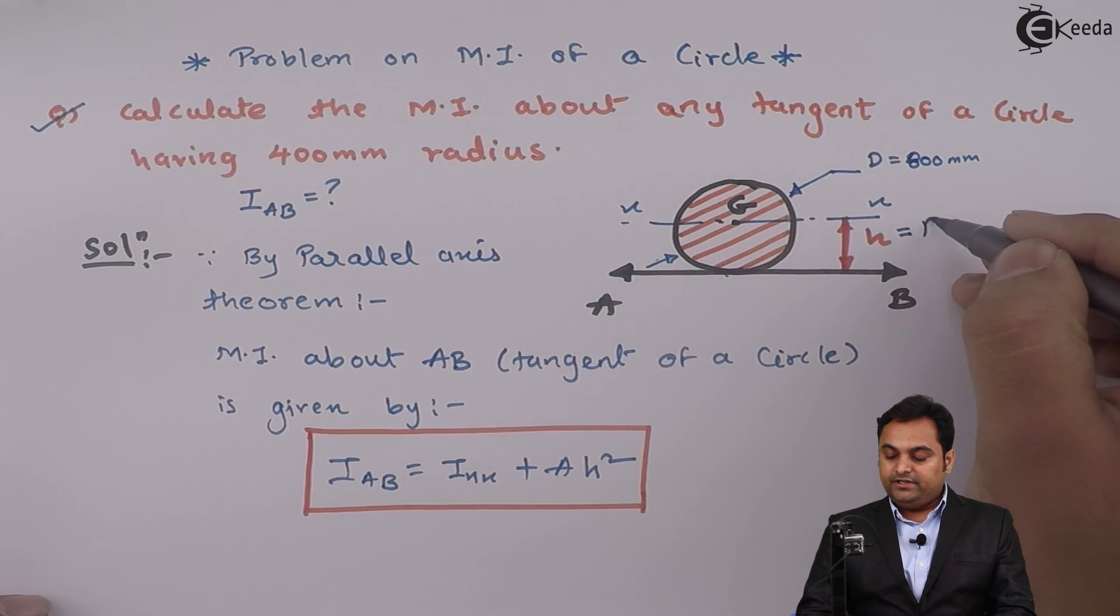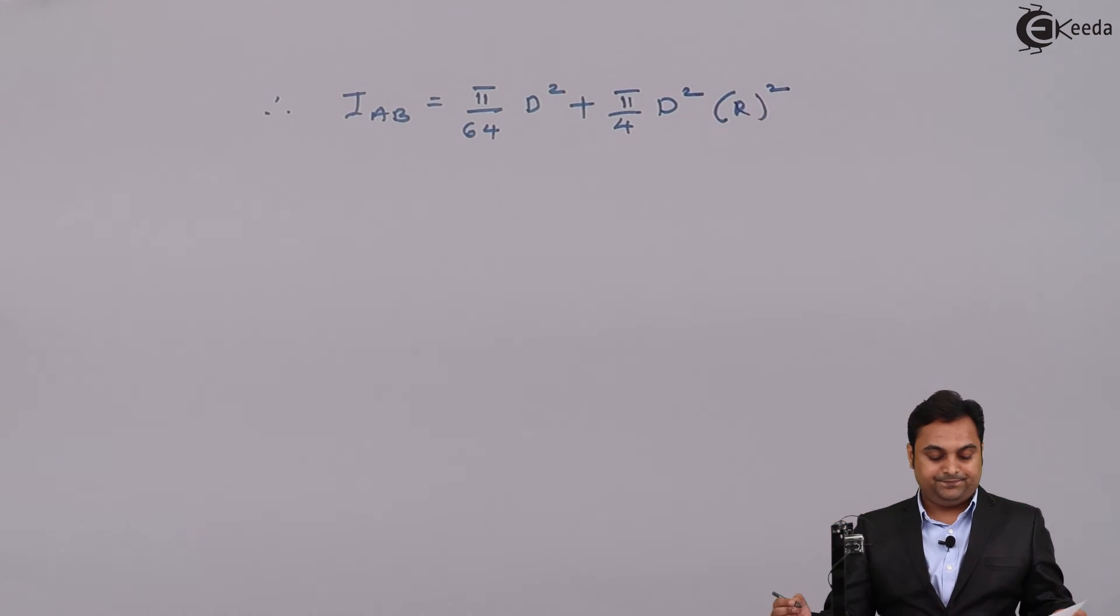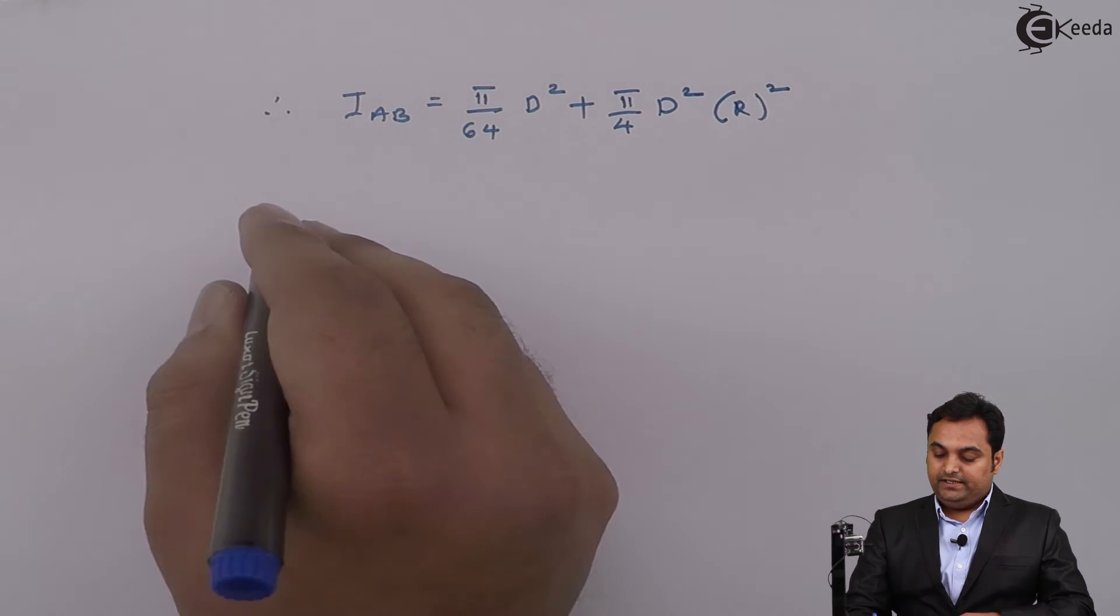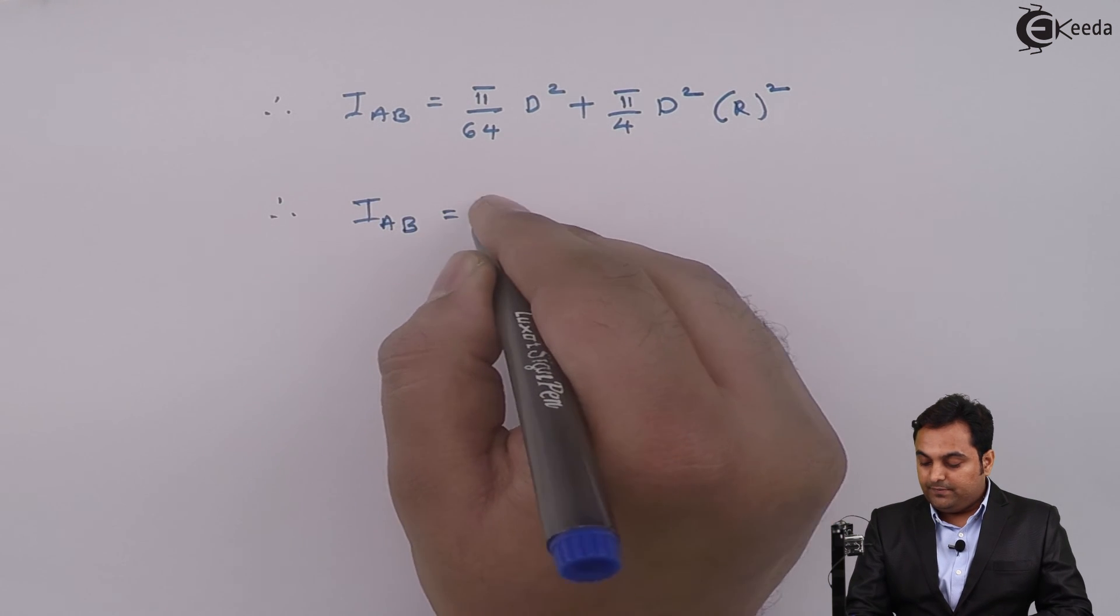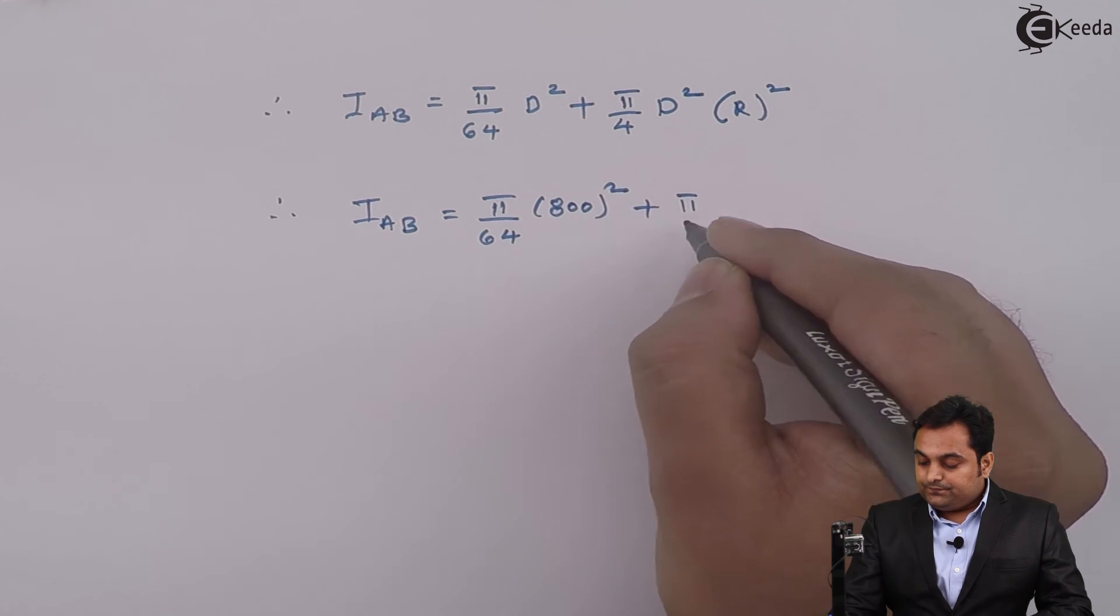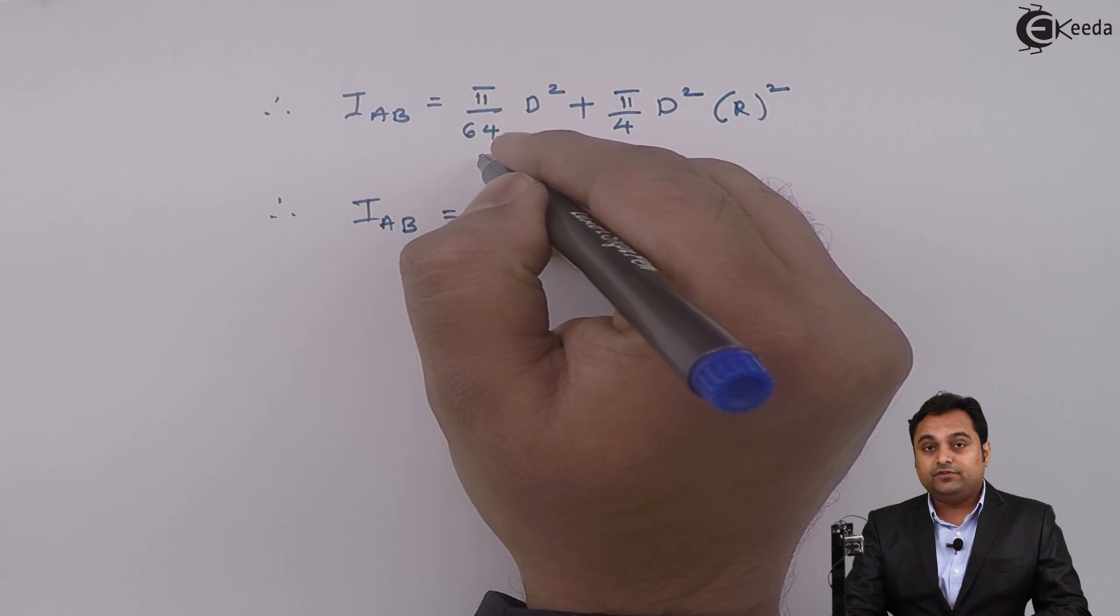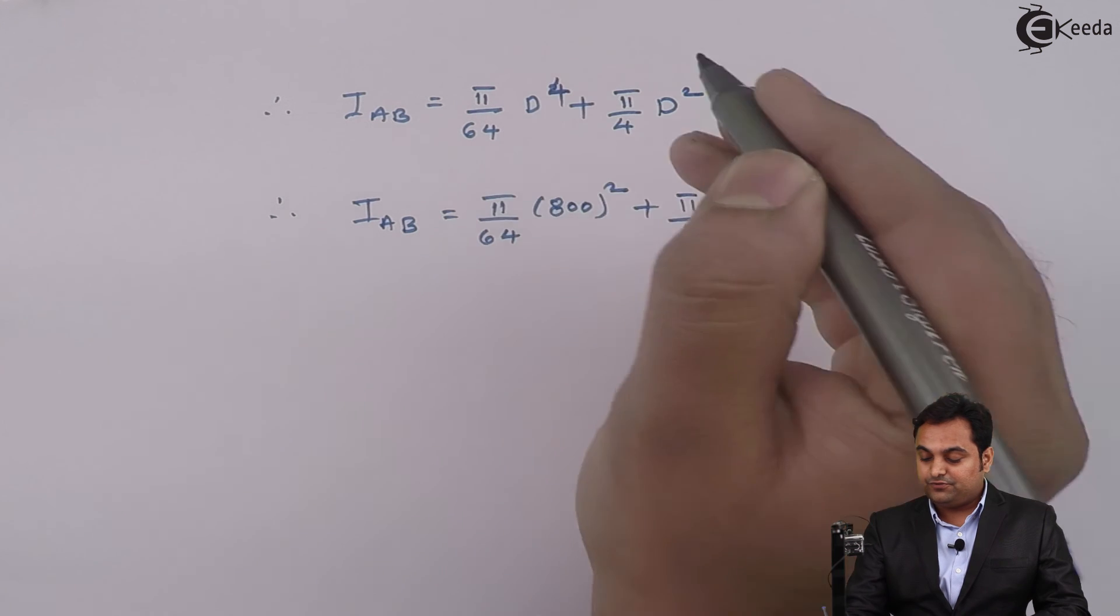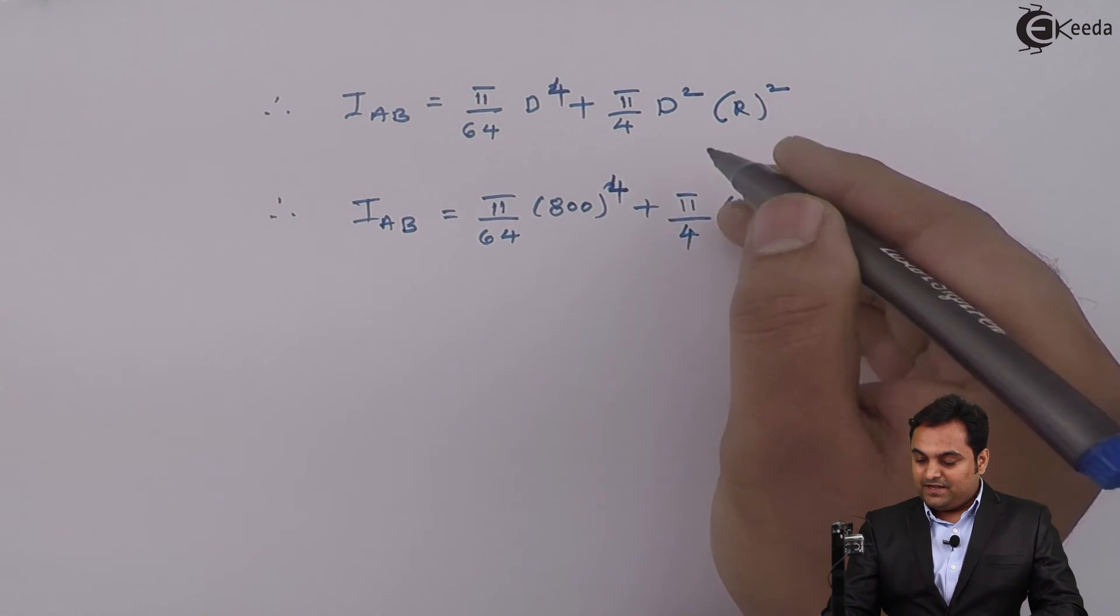So finally I'll go on putting the values. I_AB will be equal to π/64, the diameter is 800. Here in case of moment of inertia it is π/64 d raised to 4, so it is 800 raised to 4, and it is π/4 d square that is the area.